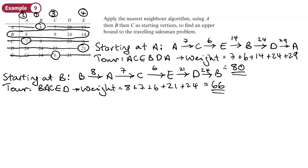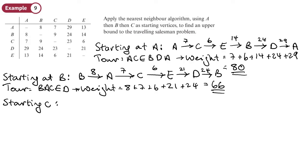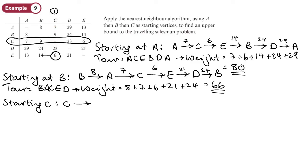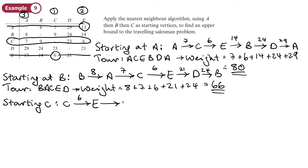Now starting at C. Let's clear our table again and start at C. C is step one — I'll put a ring around that row so I don't use those values until the end. The lowest weight in column C is 6, so I'm going from C to E with a weight of 6. Then from E, the lowest weight in that column is 13, so I go from E to A with weight 13.